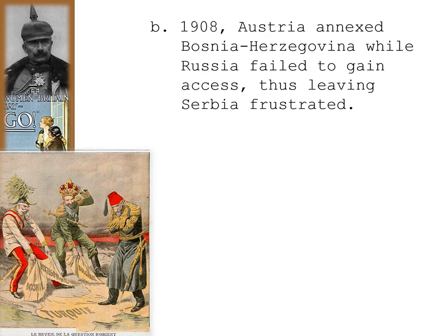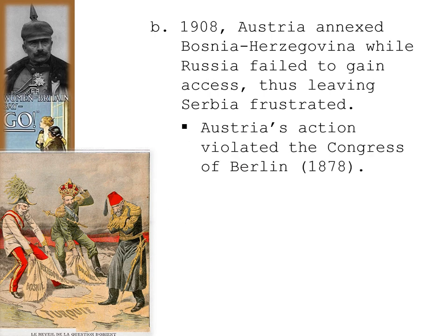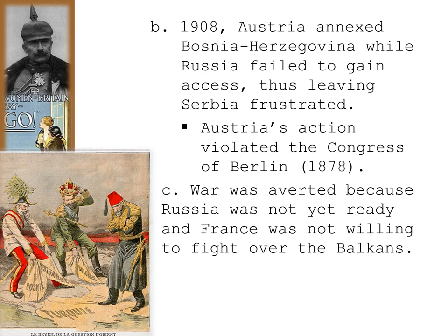Austria's action violated what had been decided at the Congress of Berlin in 1878. War was averted because Russia was not yet ready and France was not yet willing to fight over the Balkans region. Once again there was a boil-up and then it settled down — but it would eventually boil over.